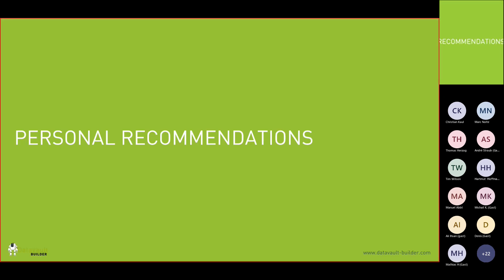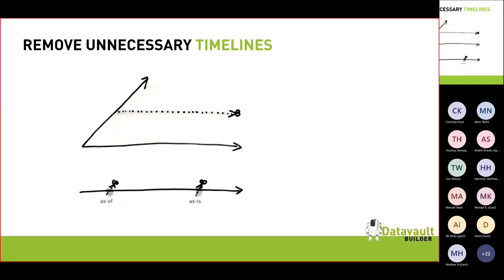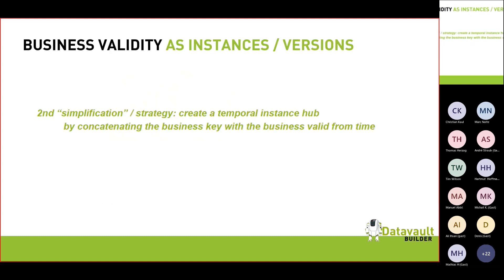My personal recommendations, based on experience: first, remove unnecessary timelines — check again and again if you can take out any of these three dimensions from your reports. Second, I'm creating business validity as an instance or version hub — taking a hub and combining the business key with the valid-from date to create its own object.